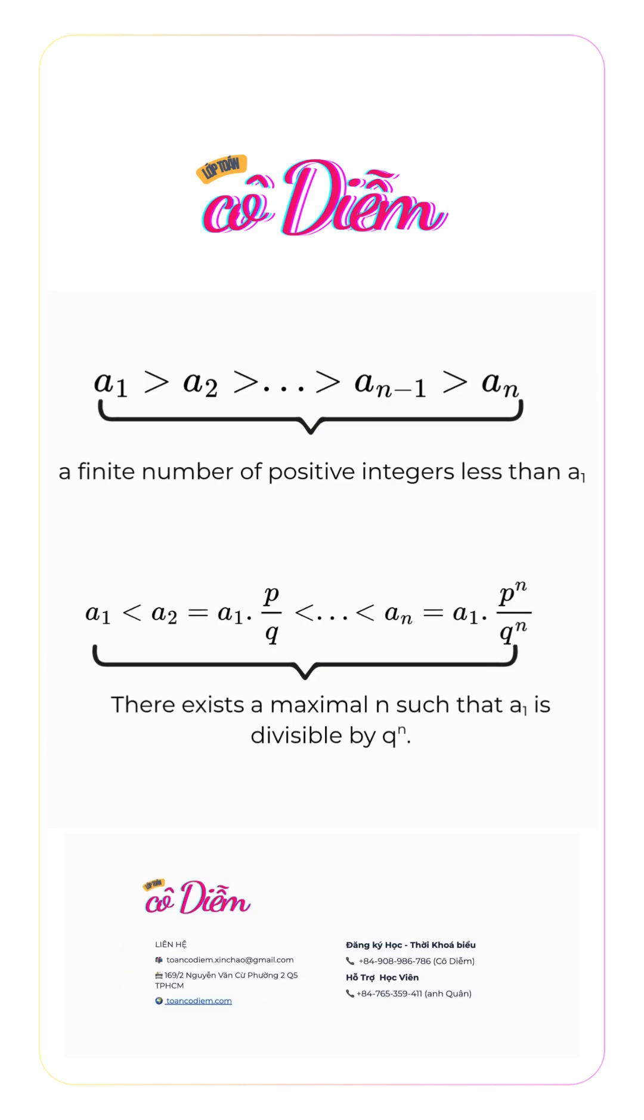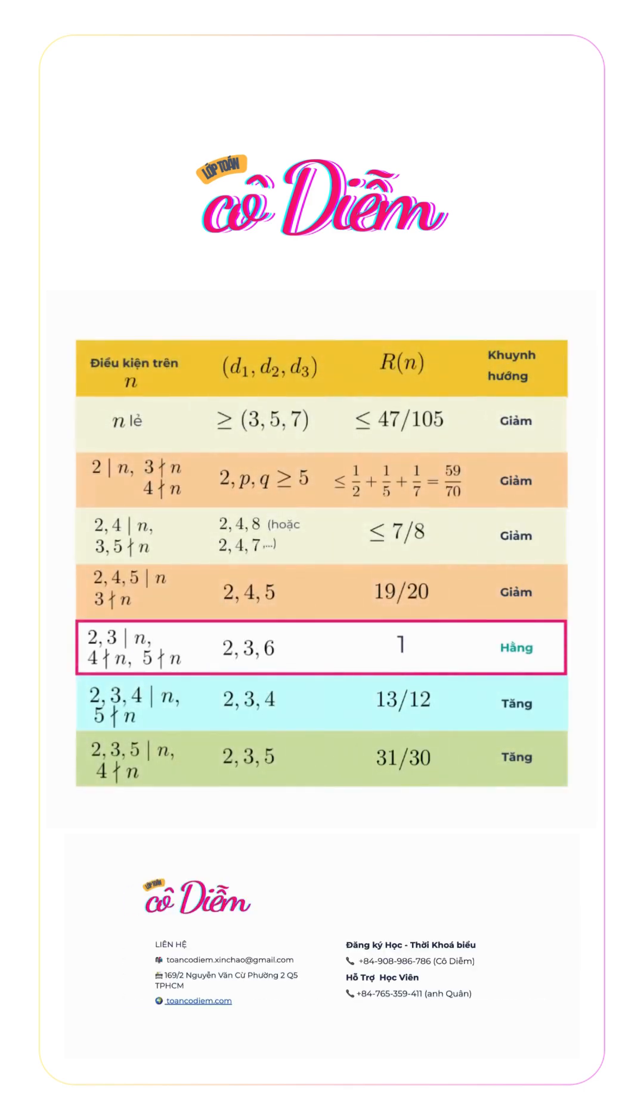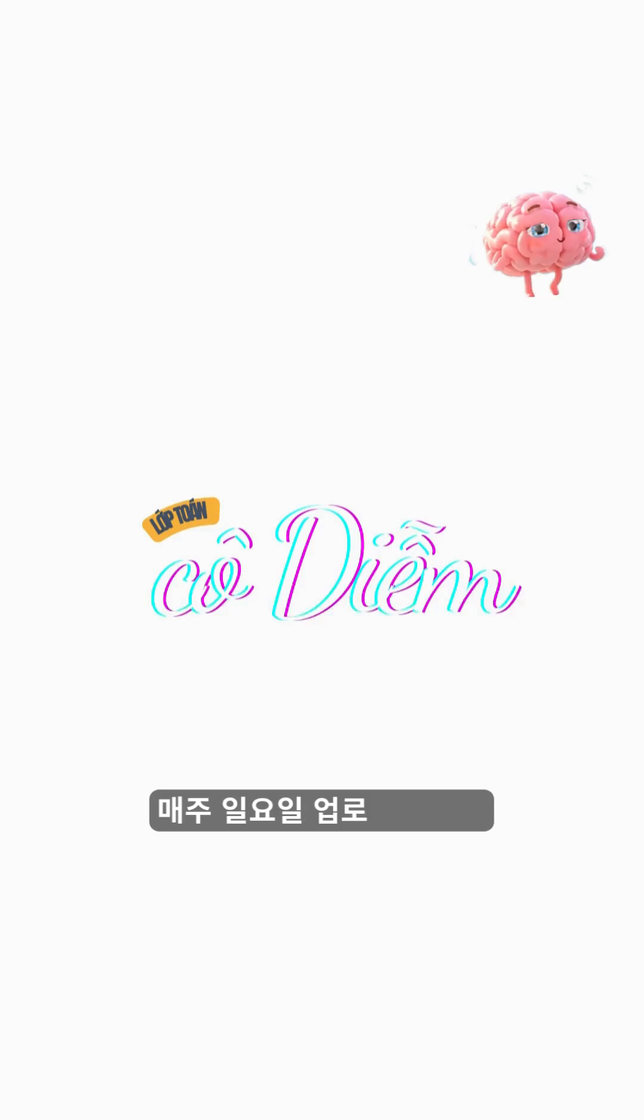Thus, the only way for the given sequence to be infinite is to enter a constant loop with ratio R = 1. The question is, what happens before the sequence enters the constant loop? Is it possible for it to decrease or increase first? That will be the main topic for next time.